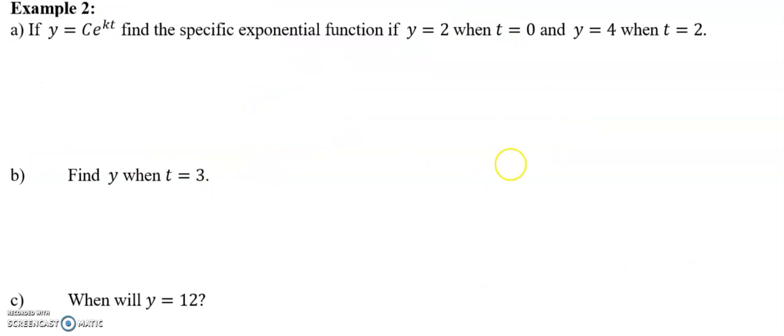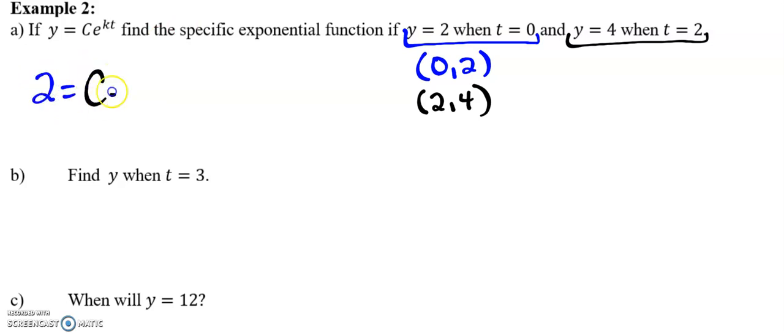All right. So this next one, it says, if y equals C e to the kt, find the specific exponential function if we know all of this information. Well, what's important here is you want to pull out some coordinate points. We know that our function has to go through the point 0, 2. We also know that our function has to go through the point 2, 4. And so what that allows us to do is to set up an equation. So I'm going to use the initial condition.